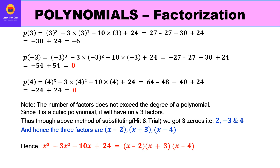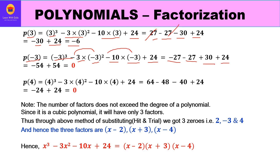Replacing x by 3: 3³ - 3(3²) - 10(3) + 24 = 27 - 27 - 30 + 24 = -6. Not zero. Replacing x by -3: (-3)³ - 3(-3)² - 10(-3) + 24 = -27 - 27 + 30 + 24 = 0. So -3 is also a zero of the polynomial, and therefore x + 3 is one of the factors.